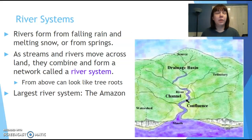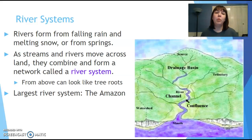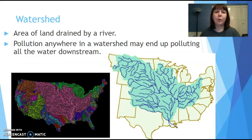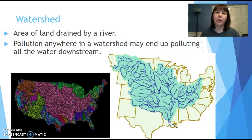When we talked about the hydrosphere, we talked about river systems. Water falls to the ground as precipitation, then it flows, collects, and drains to form big river systems that take it eventually to a larger body of water — like the Great Lakes, the Gulf of Mexico, or an ocean. Our largest river system in the world is the Amazon River. In North America it's the Mississippi River, and here is a map showing you the watershed drained by the Mississippi. Any pollution at any part of this watershed can end up polluting all the water downstream and eventually into the ocean.